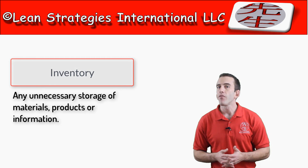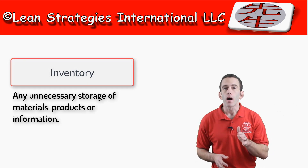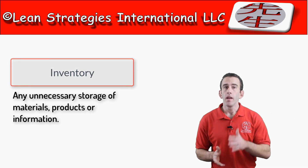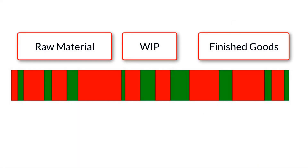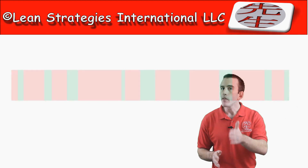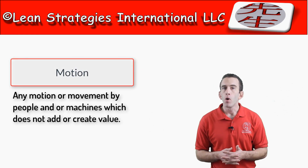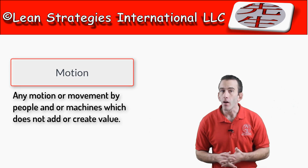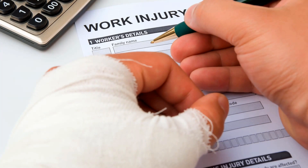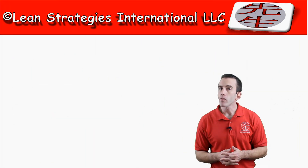Inventory waste can be defined as any unnecessary storage of materials, products, or information, and it is found all throughout the value stream. After inventory waste, we have the waste of motion. This type of waste is directly related to motion or movement by people and machines which does not add or create value, like reaching too high or bending too low.